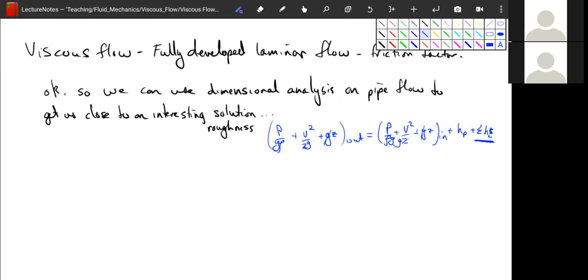What we will see is we'll get a repeatable term that has v squared over 2g times something that we will use to model all of our losses.